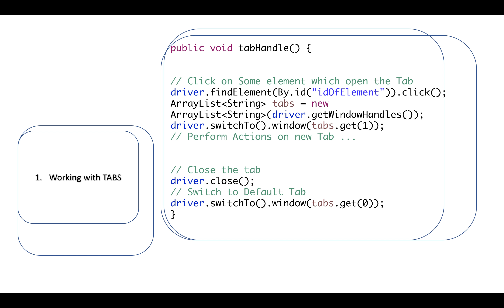How to work with tabs: use a List to store window handles. Perform the action that opens multiple tabs, get window handles using driver.getWindowHandles() stored in a list, switch to a specific tab by index using driver.switchTo().window(tabs.get(index)), perform the operation, close the tab, then switch back to tab zero or any previous tab.